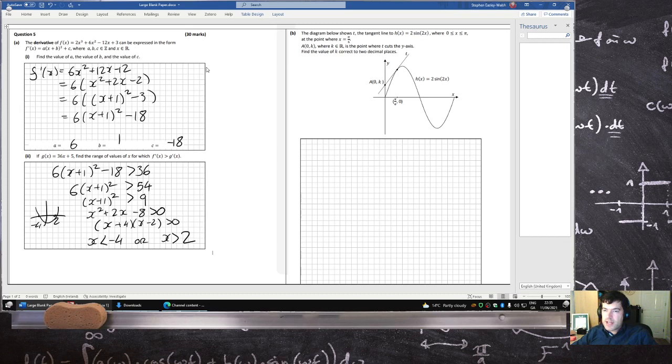Diagram below shows a tangent to this curve at this point, pi over 6. And basically, where does the tangent cross the y-axis? So we have to get the equation of the tangent, but first we need the y-coordinate.